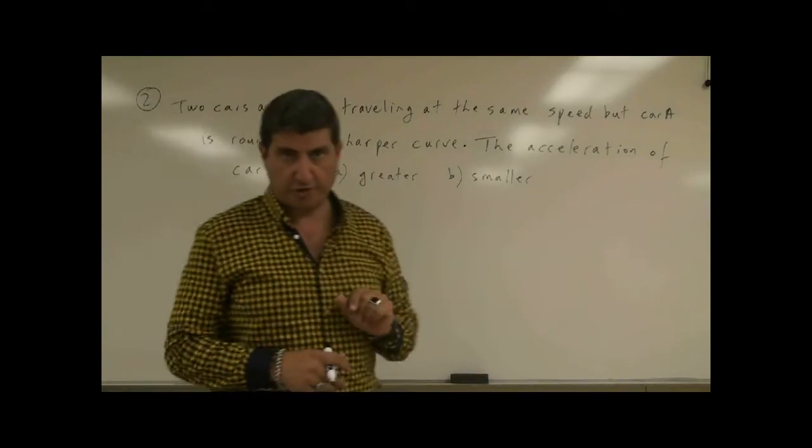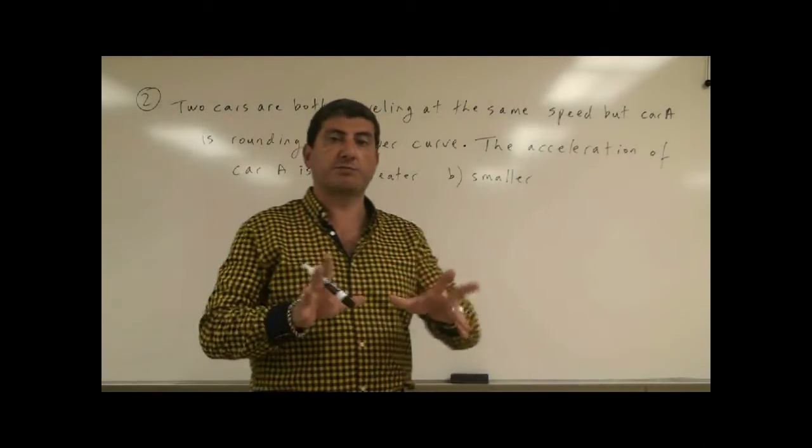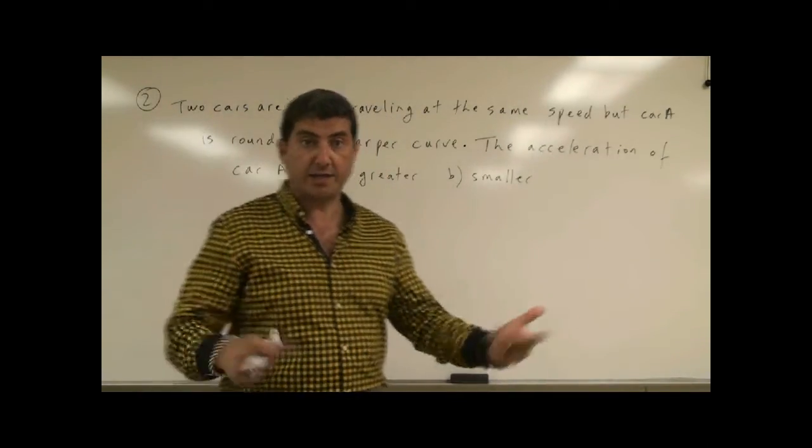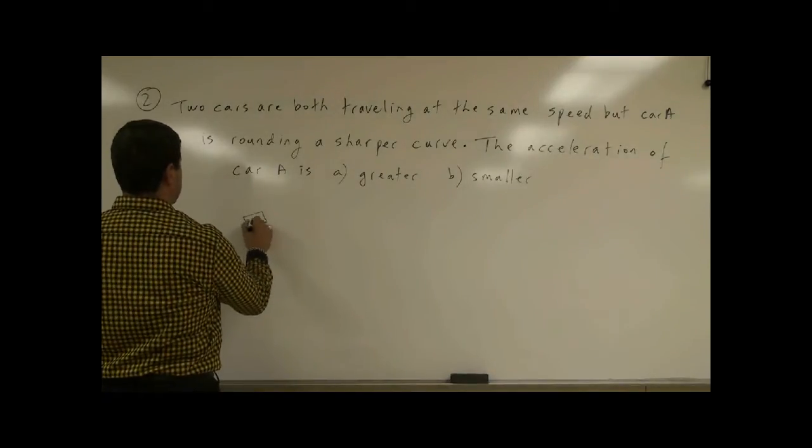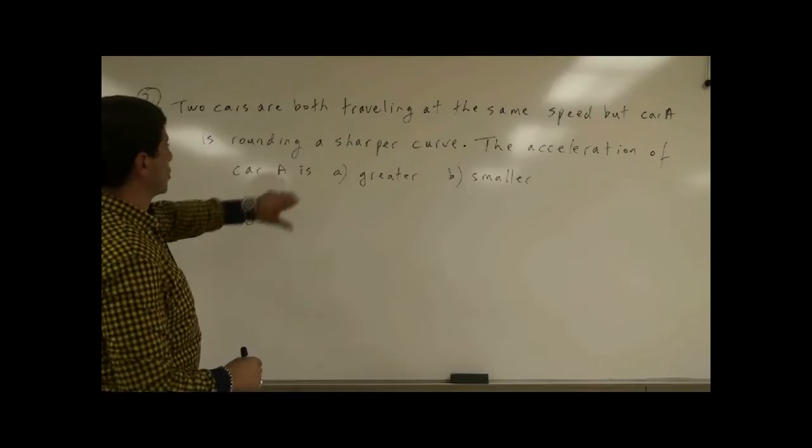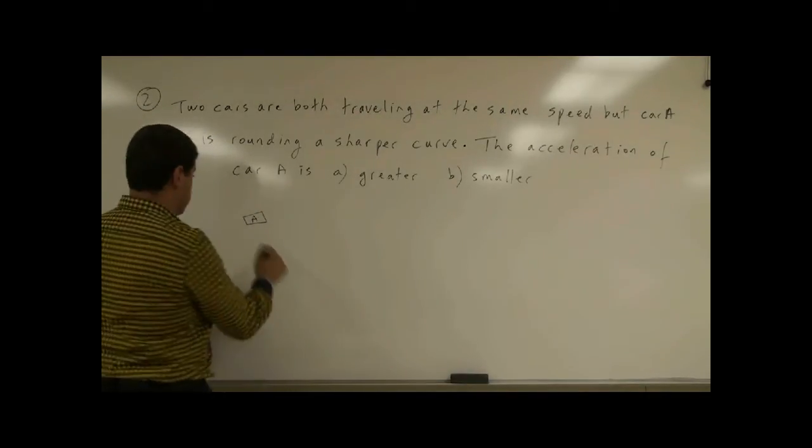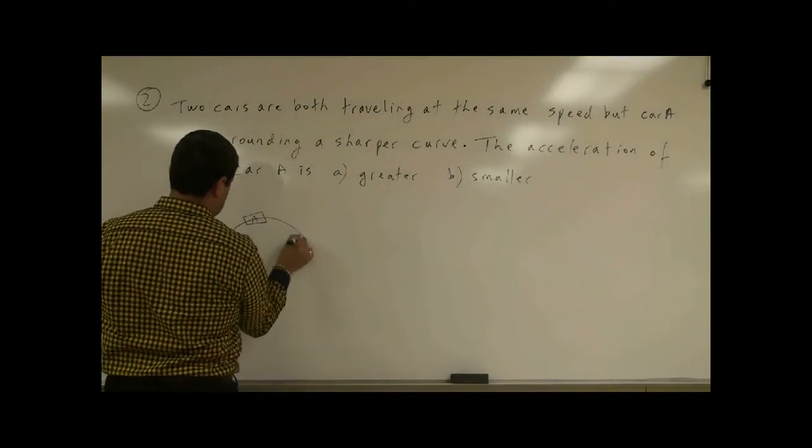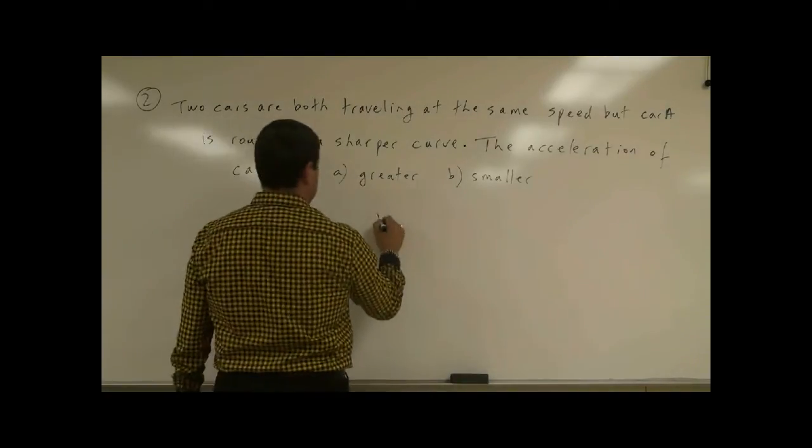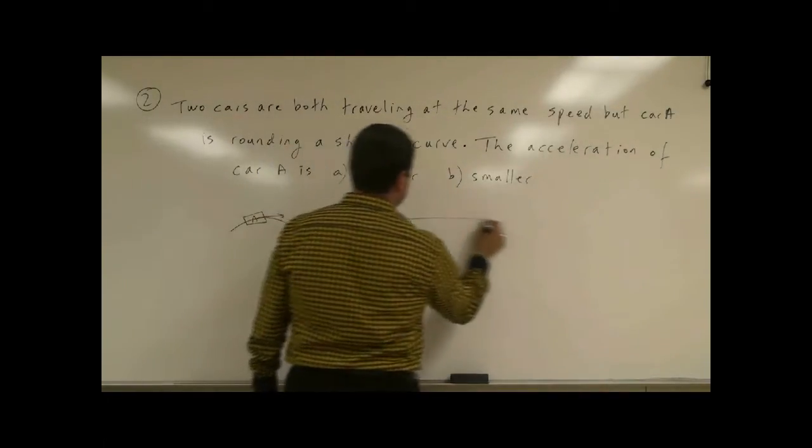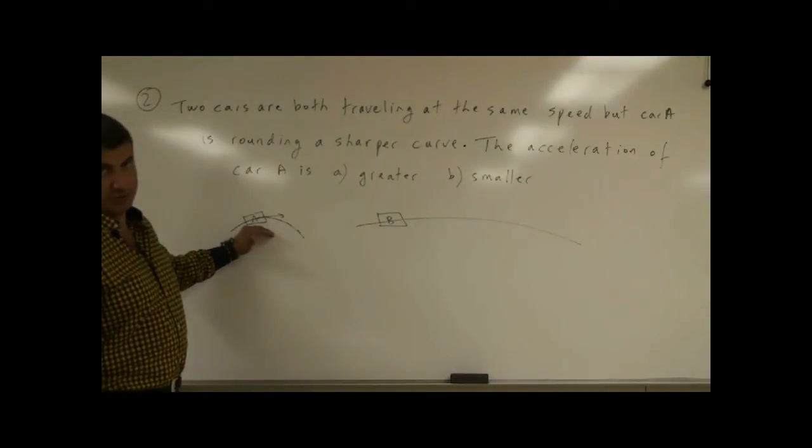Greater or smaller than the acceleration of car B? So let's draw a quick picture and explain what the answer is and why. So we have car A is making a sharper curve. Sharper curve means it's a quicker turn. And then car B is making a more gentle turn.